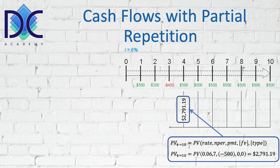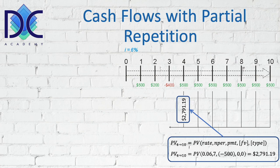For period four to ten, we can calculate the present value at the end of period three using the Excel present value formula. We find 0.06, then minus 500 which is the repetitive cash flow, zero for present value, and zero to indicate we discount at the end of the period, which gives us about 2,791 dollars.